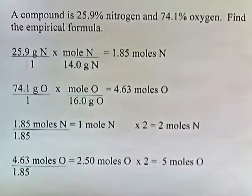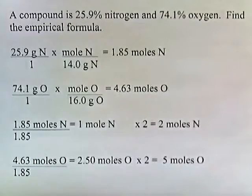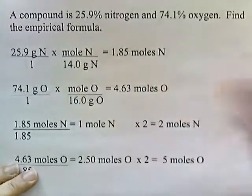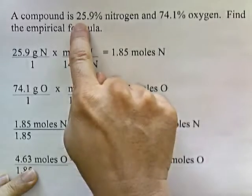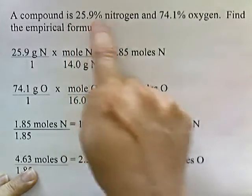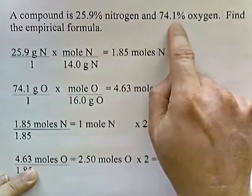Okay, so here's our problem. A compound is 25.9% nitrogen and 74.1% oxygen. Find the empirical formula. We're just going to assume that we have 100 grams of sample and that this is 25.9 grams of nitrogen and 74.1 grams of oxygen.